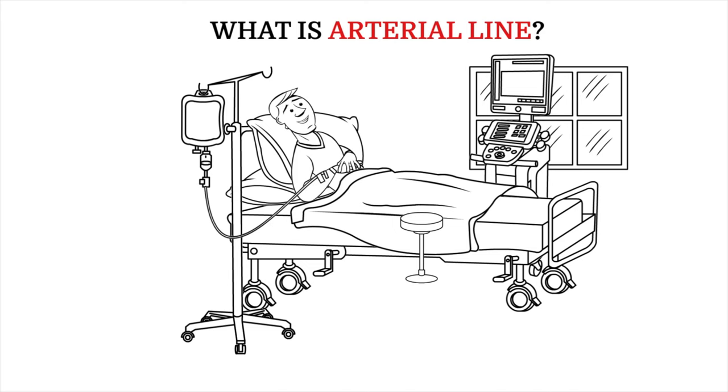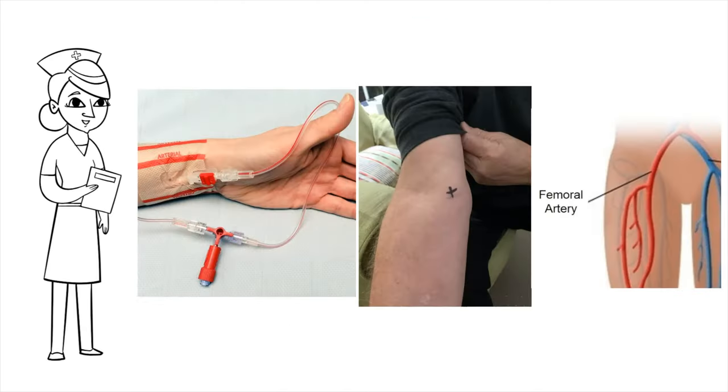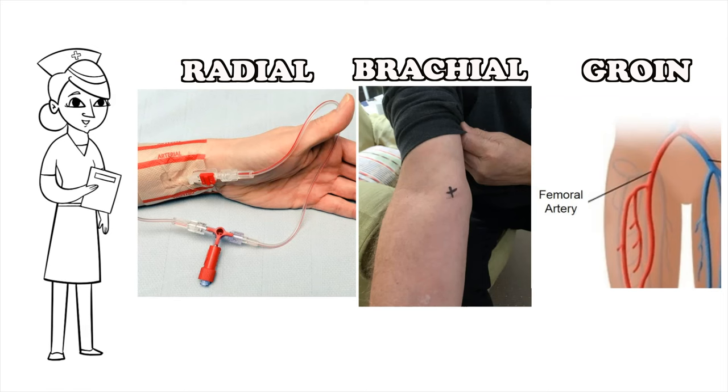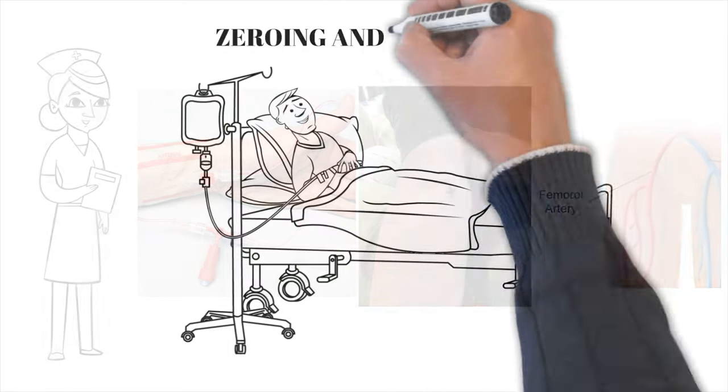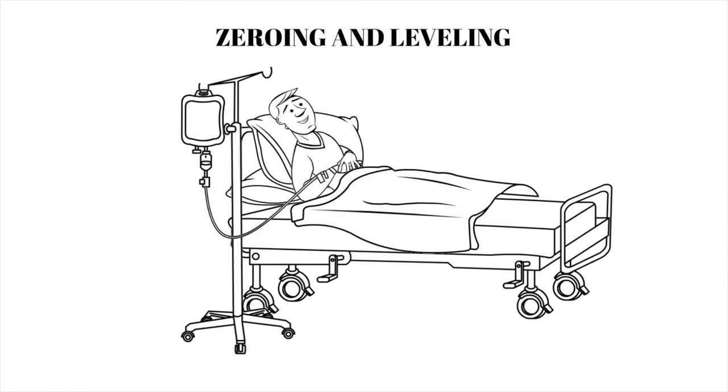What is an arterial line? An arterial line is a thin flexible tube that is placed into an artery. It helps doctors and nurses check blood pressure and take blood samples. This line is usually placed in the wrist, brachial, or groin. To ensure accuracy of hemodynamic pressure readings, two baseline measurements are necessary.